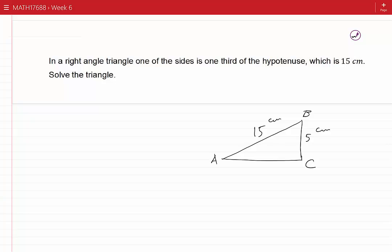By solving a triangle, we mean finding all of the angles and all of the sides. There is one side unknown which is AC. I call it X.